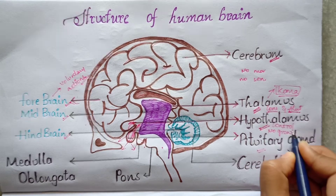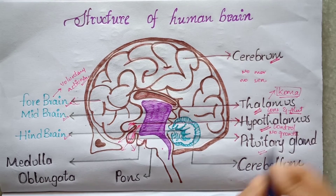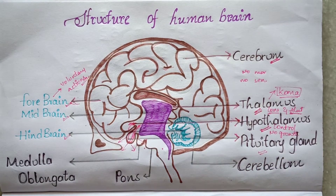Damage to the hypothalamus can cause disruption in body temperature regulation, or sodium and water imbalance.